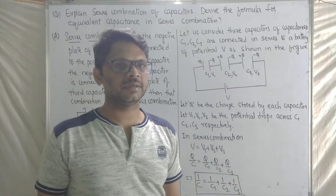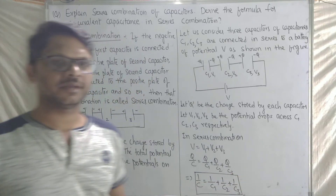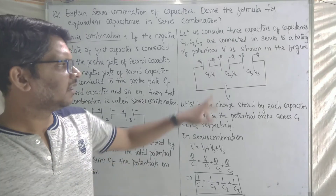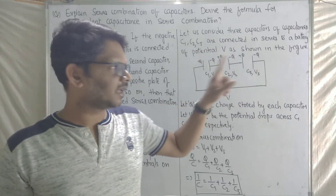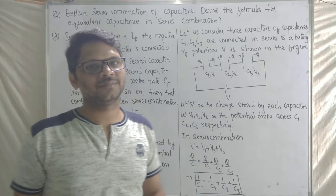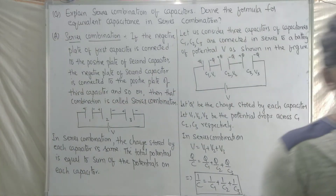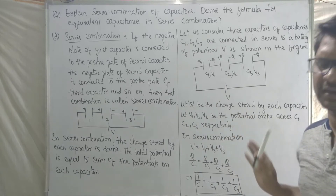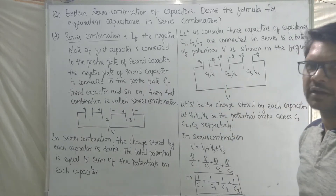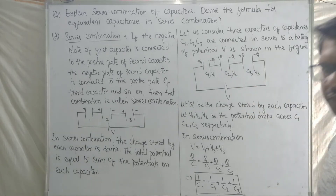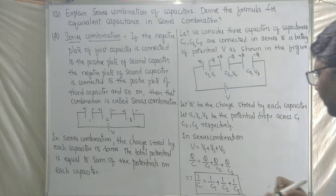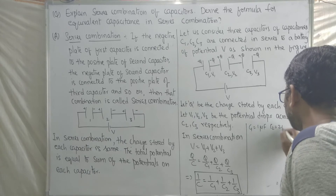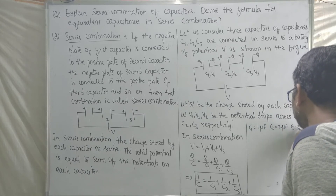For example, let us calculate the effective capacitance. Let C1 = 1 microfarad, C2 = 2 microfarad, C3 = 3 microfarad. Using the formula 1/C = 1/C1 + 1/C2 + 1/C3.